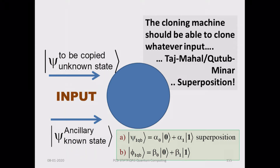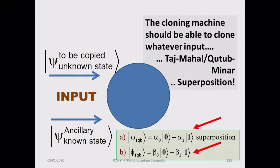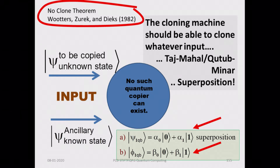We will now consider cloning — or attempted cloning — of two vectors, each being in a state of superposition of 0 and 1. This is a single qubit. The other vector is also a superposition of 0 and 1, but with different coefficients — one has coefficients alpha_0 and alpha_1, the other has beta_0 and beta_1. Both are normalized. This is the superposition state that we will attempt to clone. I am careful about using the term 'attempt to clone' because such cloning is not possible — this is the no-clone theorem.